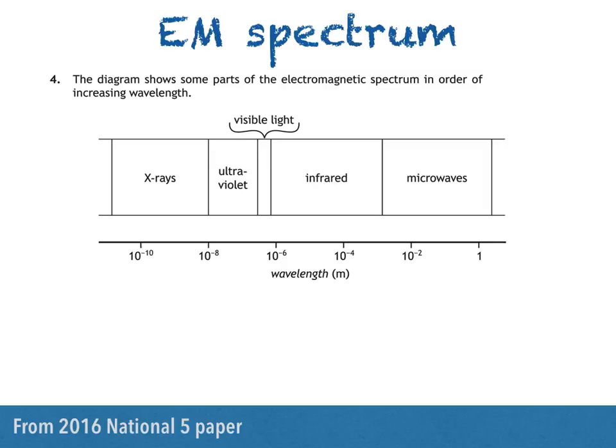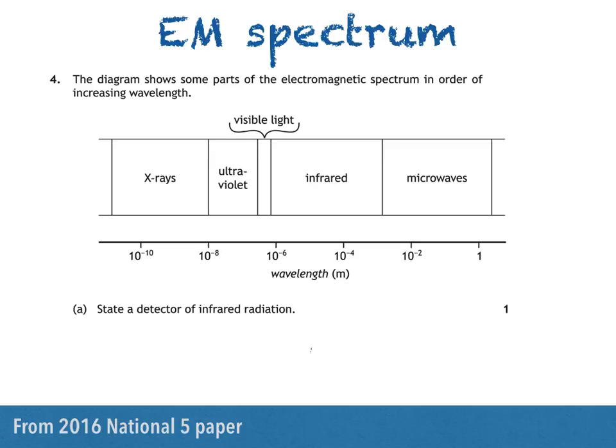Part A asks us to state a detector of infrared radiation. Now the marking scheme allows many possible answers, but I'm going to go for a photodiode, which would be connected to a meter. You should be able to name a detector for each of the electromagnetic waves, and this is something I'll talk about in a separate video.